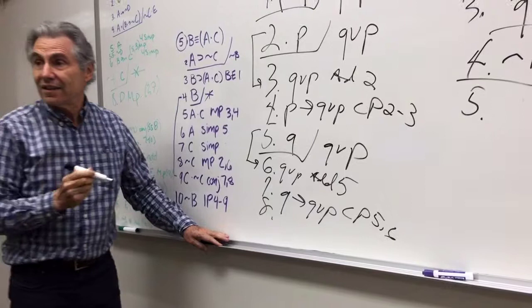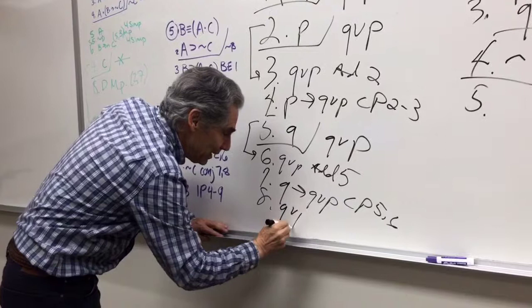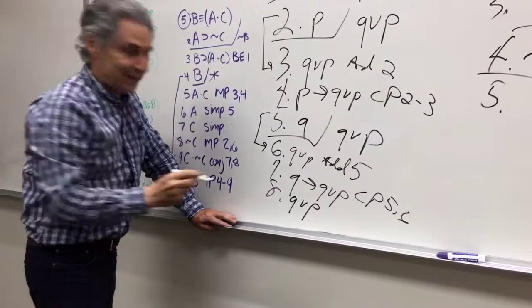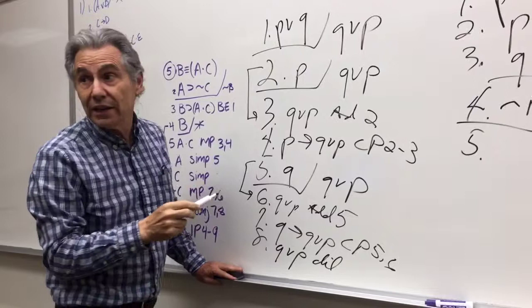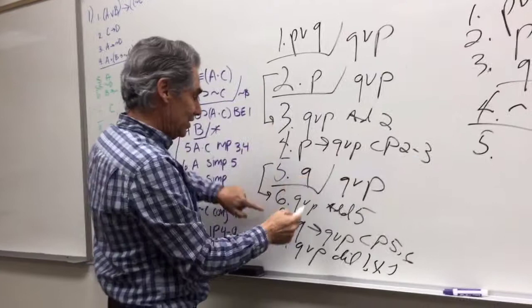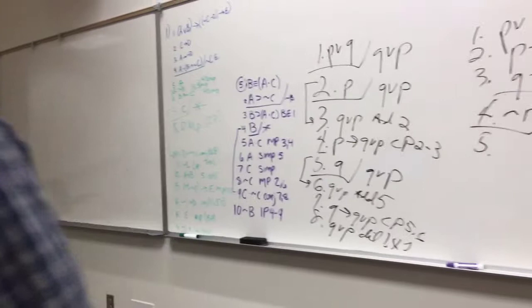Now I apply dilemma. I get Q or P by dilemma. Dilemma has three inputs — it's from lines one, four, and seven. Line one says P or Q, line four says if P then I get the result, line seven says if Q then I get the result, so I get the result. That's proof by cases — it's done.